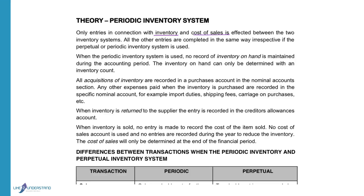All other entries are completed in exactly the same way, irrespective of whether the periodic or perpetual inventory system is used. It is only inventory and cost of sales that will be affected by which system is used.